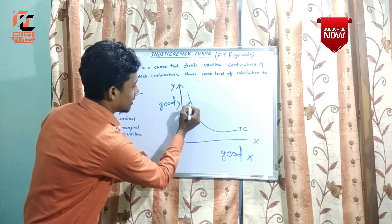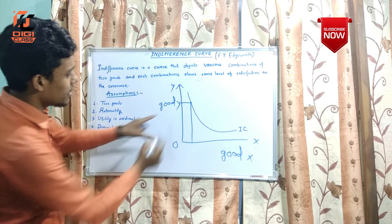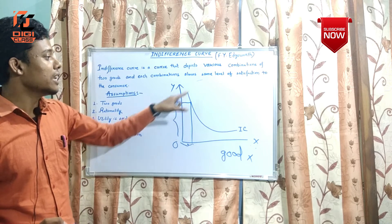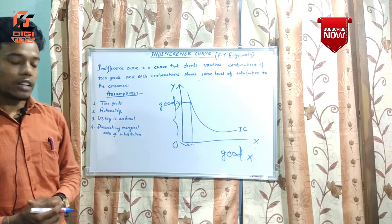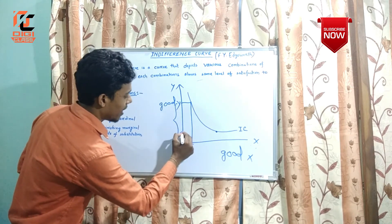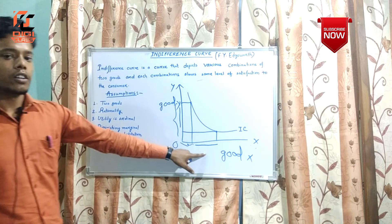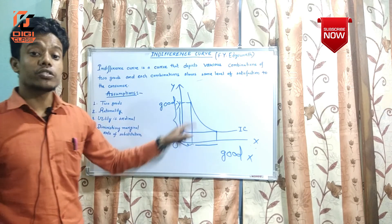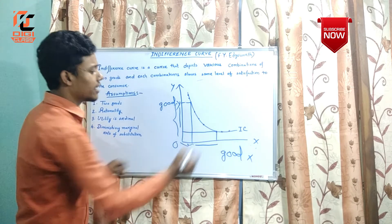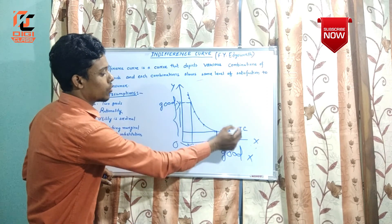At one point on the curve, the consumer consumes a certain amount of good Y and a certain amount of good X, achieving a level of satisfaction. At another point, the consumer sacrifices some amount of good Y to get more of good X. Both points show the same level of satisfaction. By joining these points, we get a curve known as the indifference curve.